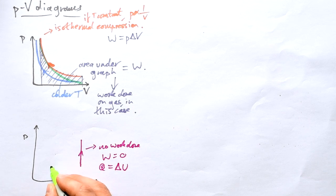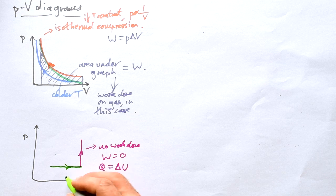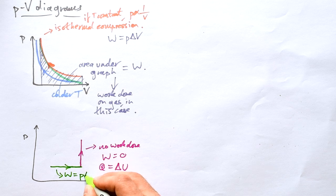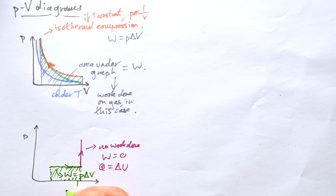What about if I had a horizontal line? Well, that's a constant pressure, but change in volume. And just like we said before, work done is equal to P delta V. So again, it is the area under the graph.